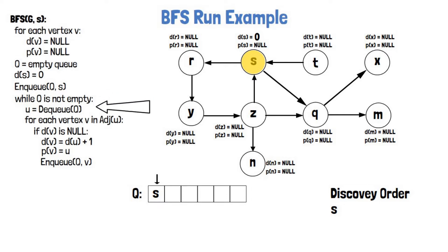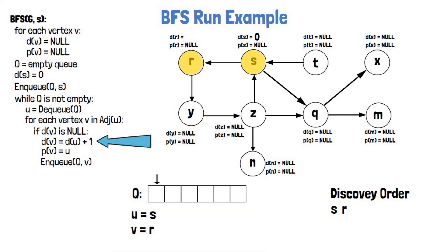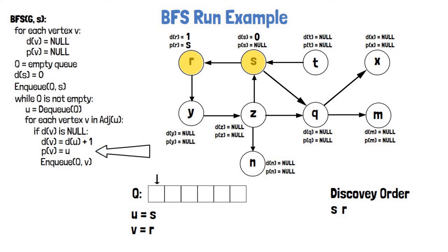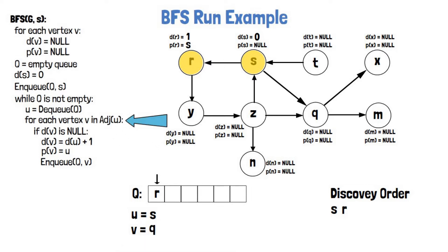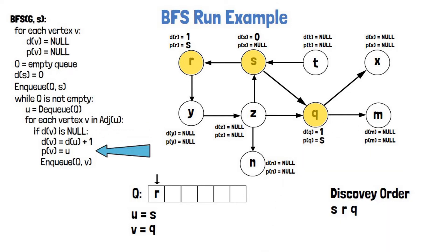We start with the first for loop, initializing all D and P properties to null, then create an empty queue. We mark discovered vertices in yellow, starting with S, and set S's distance from itself to 0. We add S to the queue. We enter the while loop and dequeue S. Going over S's neighbors, starting with R: DR is null, meaning it is not yet discovered, so we discover it. We update its distance to 1 and its parent to S, then add it to the queue. Moving to S's second neighbor Q: it is also not yet discovered, so we mark it, update its distance to 1 and parent to S, and add it to the queue.